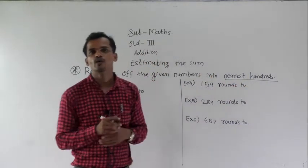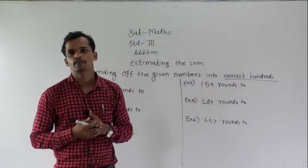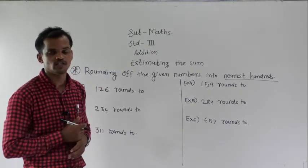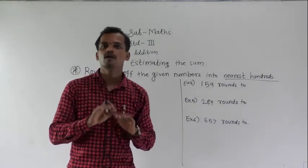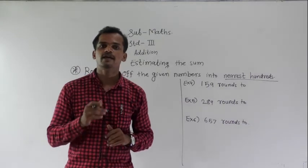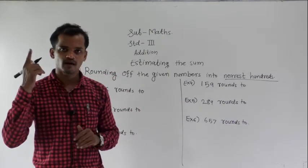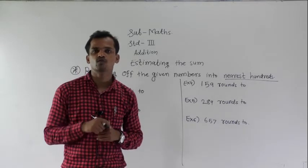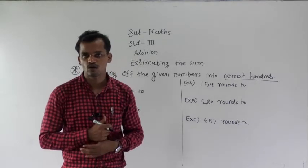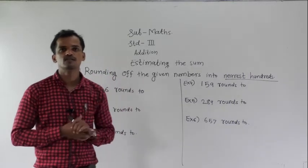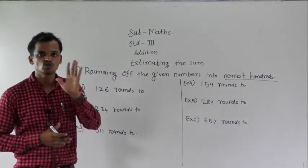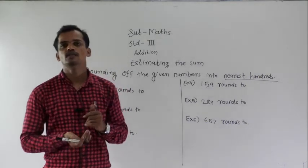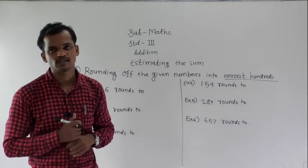Now we will see the tens place digit for rounding to the nearest 100. You have to see the tens place digit. If it is 5 or greater than 5, the number will be rounded up. If it is smaller than 5, the number will be rounded down. We will see some examples to understand how to round a given number to the nearest 100.